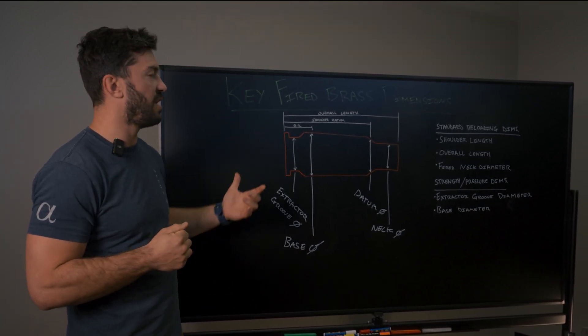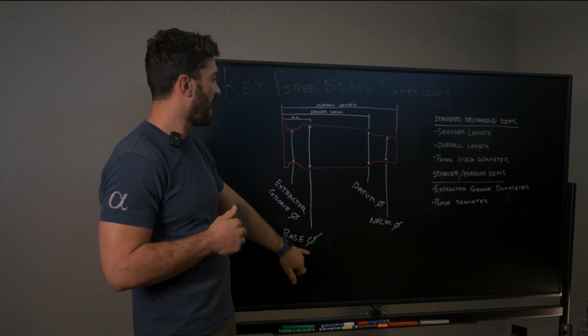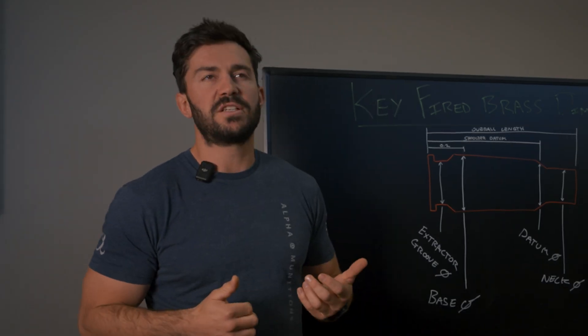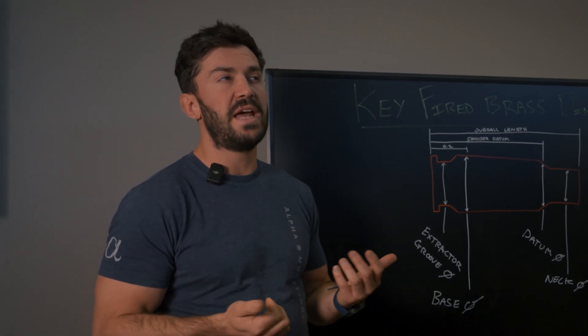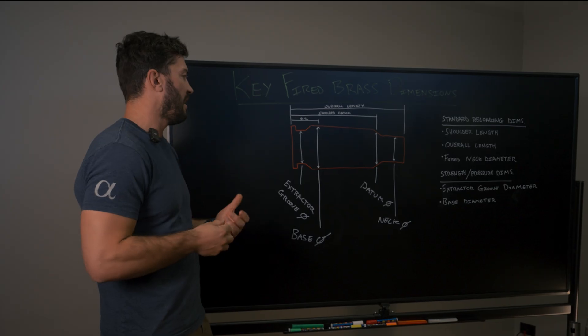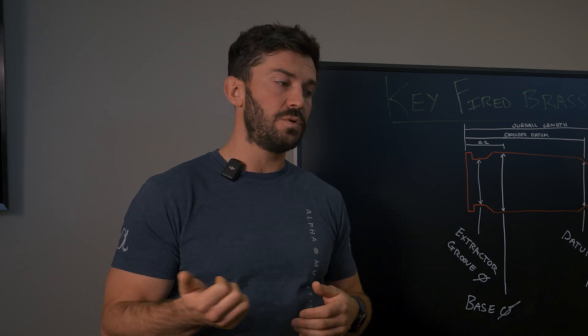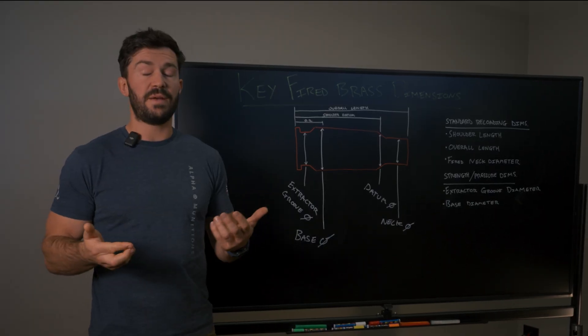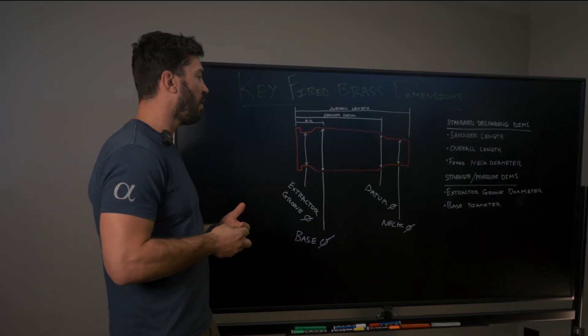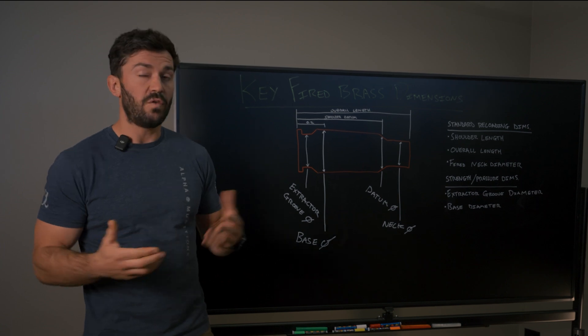One of the critical dimensions for pressure signs is our base diameter. Our virgin brass comes out for our 308 case head around 468 and then once it's fired, if you get up to like 4715, 472, that is either very hot, high pressure load or it's potentially an oversized chamber.